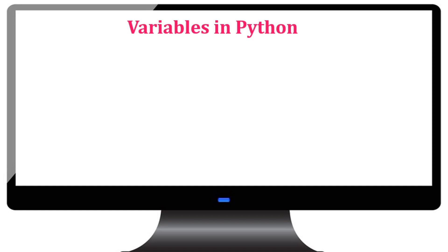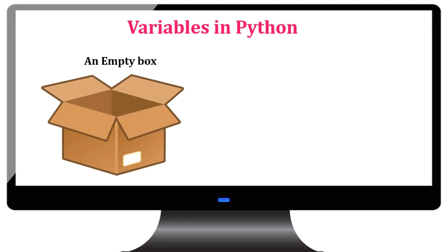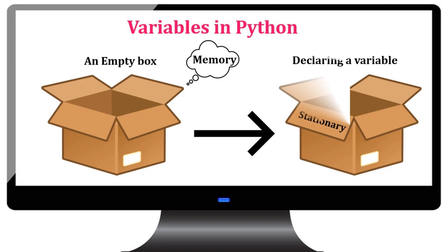A variable is a container which stores a value in the memory box. In simple words, a variable is a box which has a name and stores value in it.